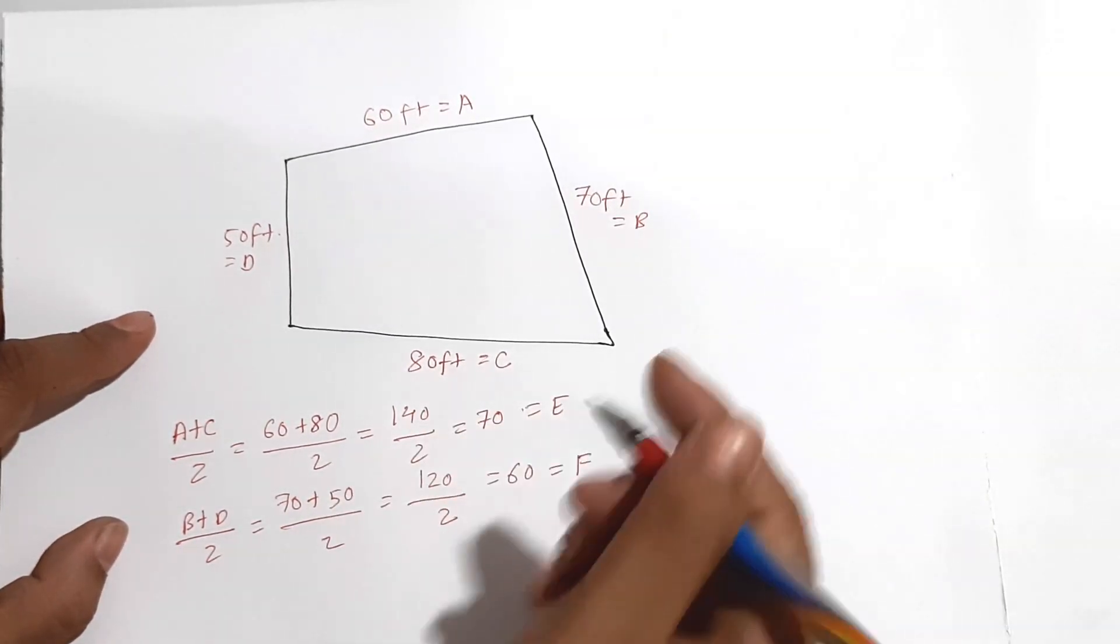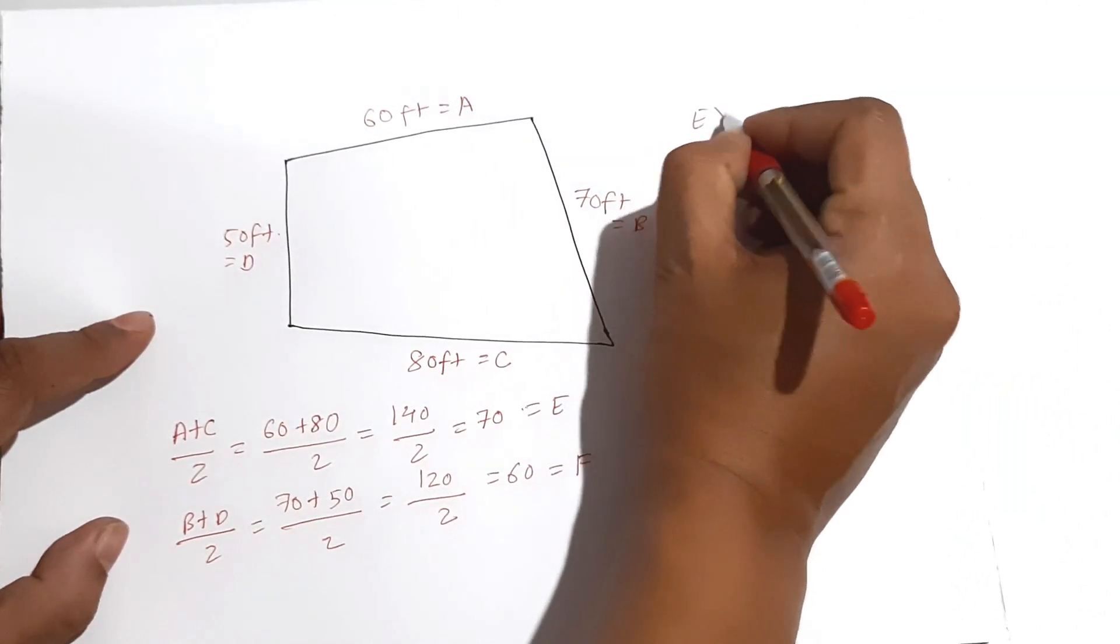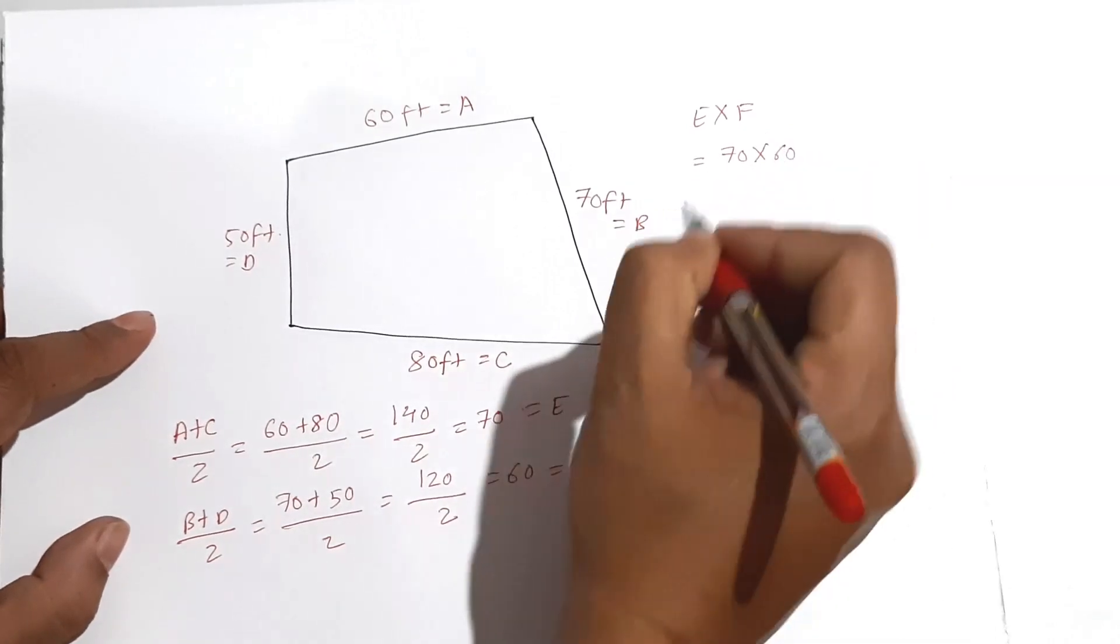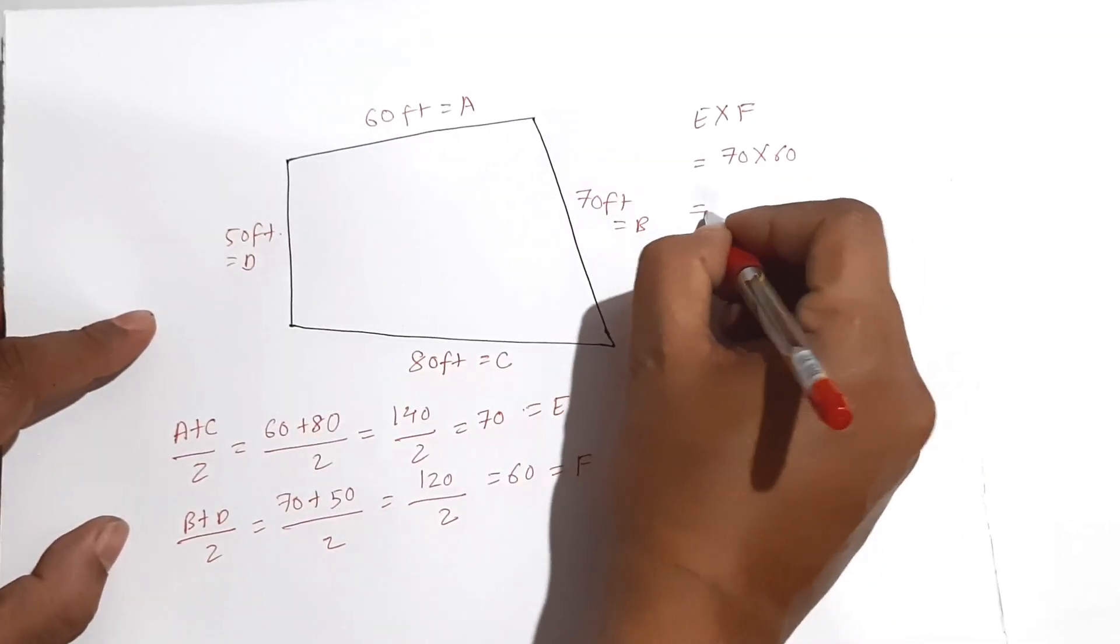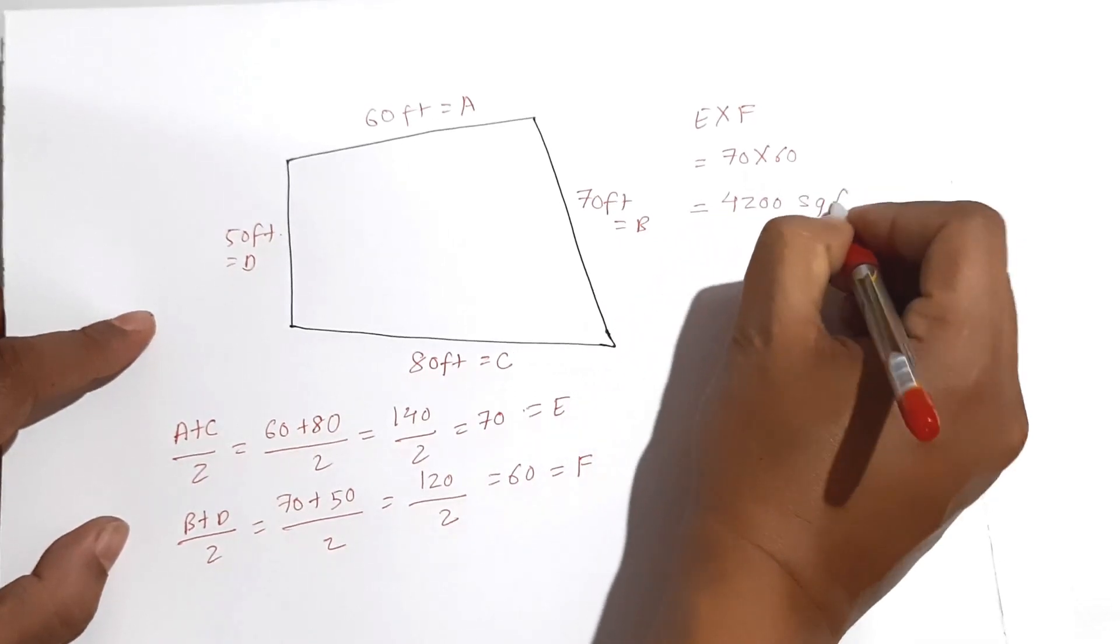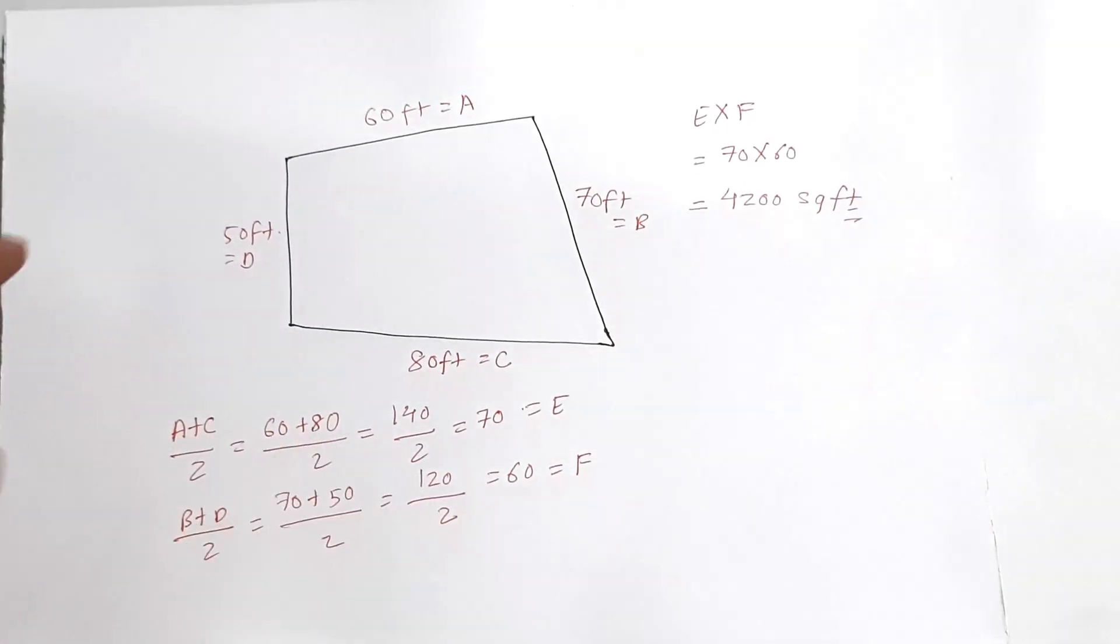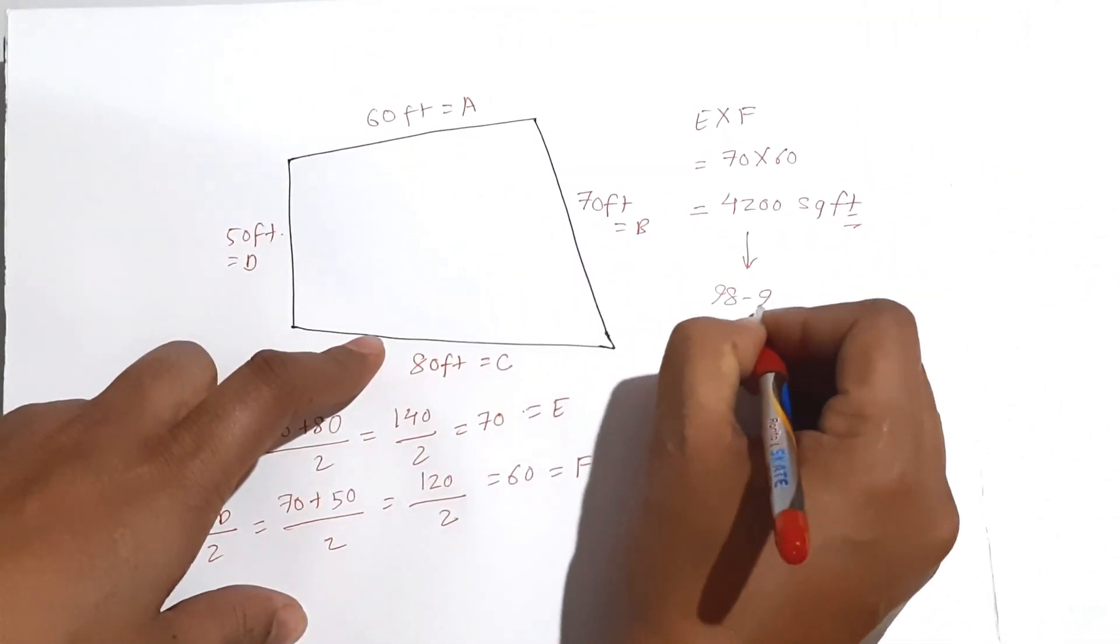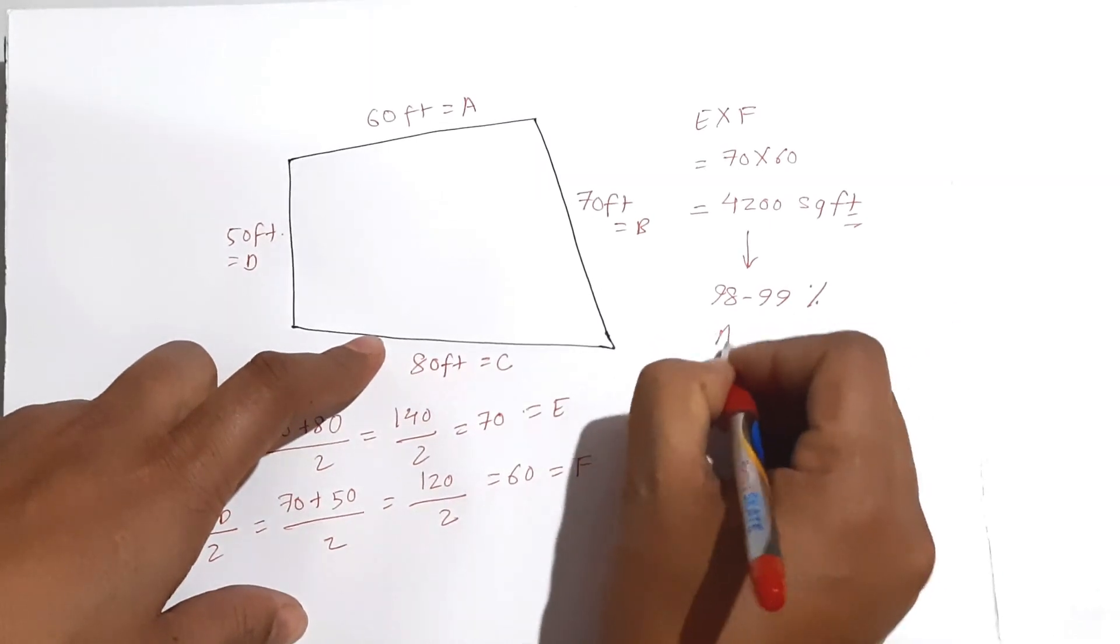Now simply multiply it. E into F equal 70 into 60. Which is equal to 4200 square feet. This is 98 to 99 percent accurate.